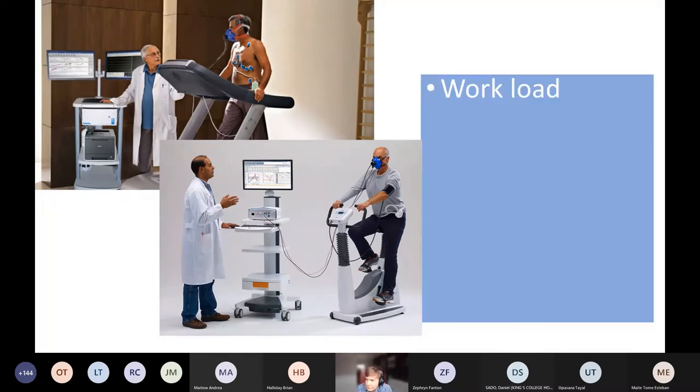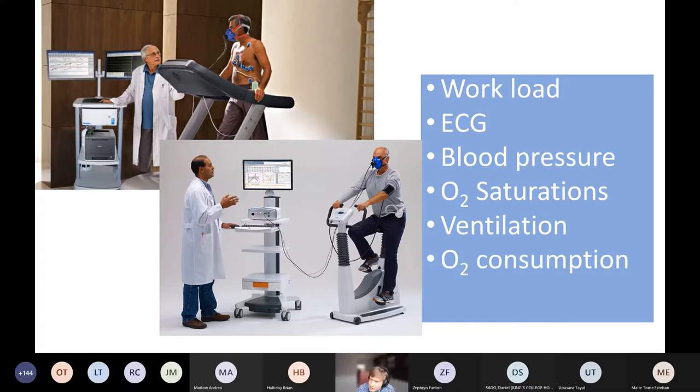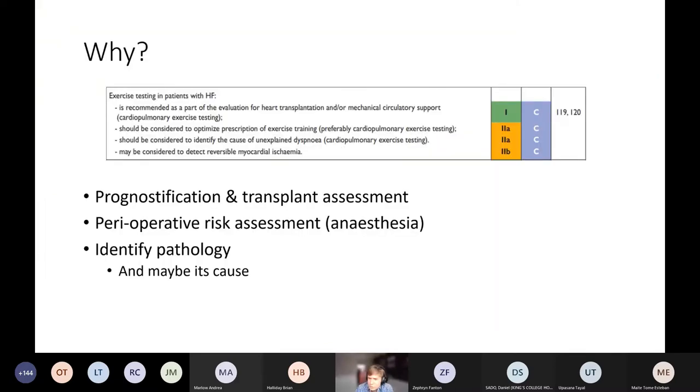What they give you are an estimate of workload, which is in watts or METs. They give you a continuous ECG and also blood pressure. They give you oxygen saturations. They also give you the breath-to-breath ventilation, so how much air is coming in and out of the patient's lungs, the rate at which their body is consuming oxygen and also producing CO2. So we get lots of numbers. So when should we use it? When should we calculate all these numbers? The ESC guidelines give it a class one level of evidence C indication in the guidelines for heart failure. So they say people who are being considered for a transplant should have a CPET.